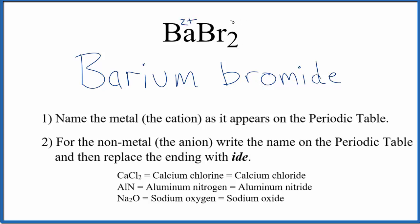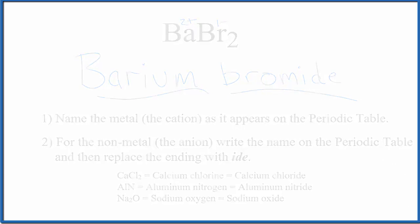Bromine is in group 17, sometimes called 7A — that's 1 minus. So you need 2 bromine atoms for the charges to balance out, so the formula would be BaBr₂. This is Dr. B with the name and the formula for BaBr₂, barium bromide. Thanks for watching.